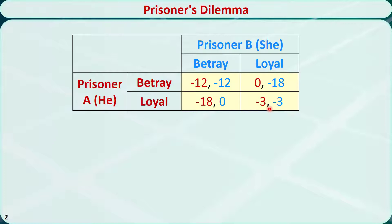Suppose each suspect only wants to minimize their own punishment. The first number in each cell of this matrix is the number of months in prison for A, and the negative sign means this is the undesirable punishment. The second number in each cell is the number of months in prison for B. The sum of the payoffs in each cell varies from a high of 24 months to a low of 6 months. Thus, this is a two-person non-constant sum game.